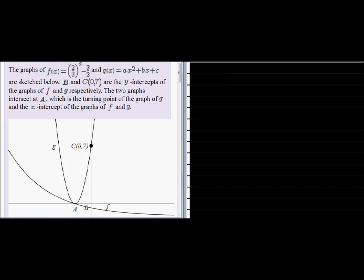The graphs of f(x) which is equal to 2 over 3 to the power of x minus 3 over 2, and g(x) which is given as ax squared plus bx plus c, are sketched below.